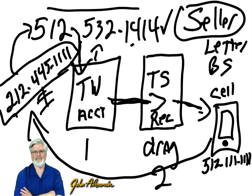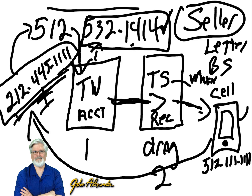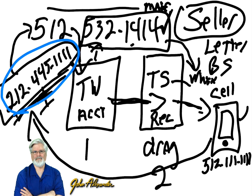Now here's the important part — how do we know which number they called before we pick up? We see their number come in and we're wondering if that's a seller or buyer, coming from this ad or that ad. Well, Twilio can whisper to you before you pick up and talk to them. It will whisper and say which number they called — and we can even code it to say something like 'from mailer' in a robotic voice, so you know exactly which campaign that call is coming from.